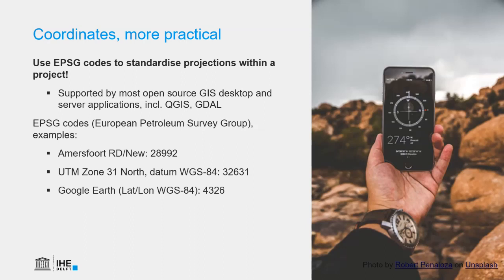If we want to use the geographic coordinate system on WGS84, with units of latitude-longitude, we use the EPSG code 4326. So how can we find the EPSG code for our project? If you work in a certain country, you can always check with the mapping agency which projection is used, and maybe they even know the EPSG code. Often, however, that is not feasible.